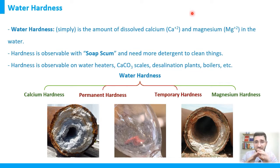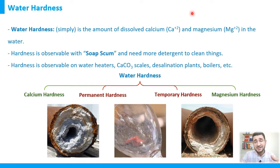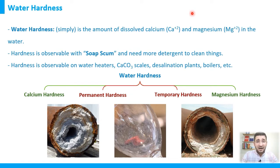So we have two definitions: the simple one refers to calcium and magnesium ions, which is correct, while specialists also recognize that barium and strontium play a role in hardness. Hardness is found in a wide range of daily applications.